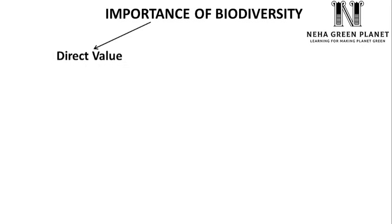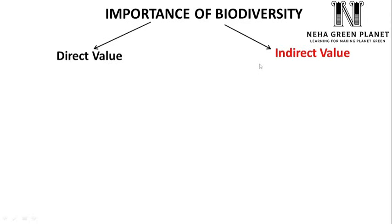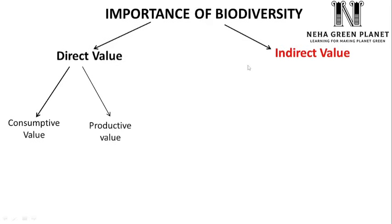The first type of value is direct value. Biodiversity plays a very important role because we obtain certain substances from nature — from plants or animals — which we use directly, and direct value is also easy to associate with monetary benefit; we can directly put a price tag on them. For example, food is obtained from plants and has a price tag attached. On the other hand, indirect value means those benefits obtained from plants and animals that are difficult to associate with any monetary terms.